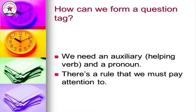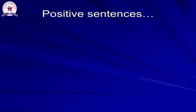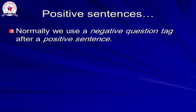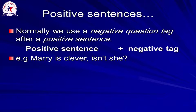There is a rule that we must pay attention to. If I have a positive sentence, the question tag must be negative. Examine the following example: 'Mary is clever — isn't she?' The auxiliary here is the verb 'to be,' which is already found, and the subject pronoun for Mary is 'she.'